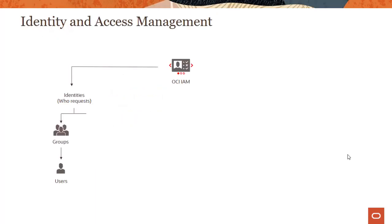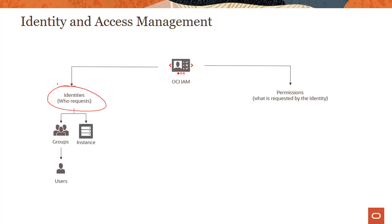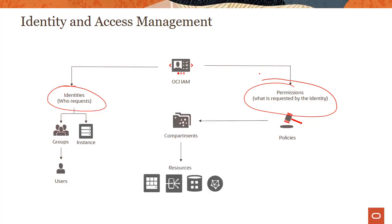I'm sure you would have seen this particular diagram in some other modules. At a very high level, OCI Identity and Access Management Service deals with a couple of things. The first one is identity — who is requesting access? And then the second one is permissions — what kind of actions does the authenticated principal want to perform?